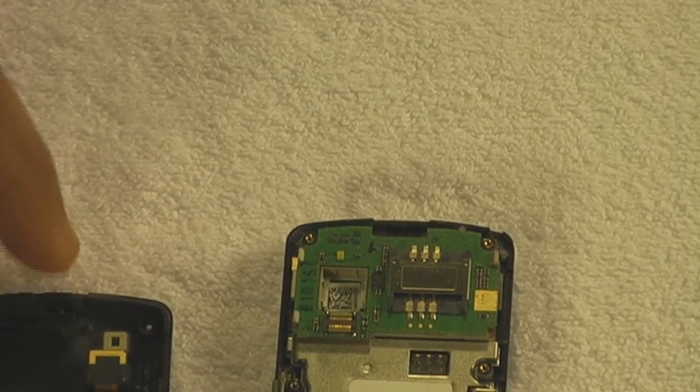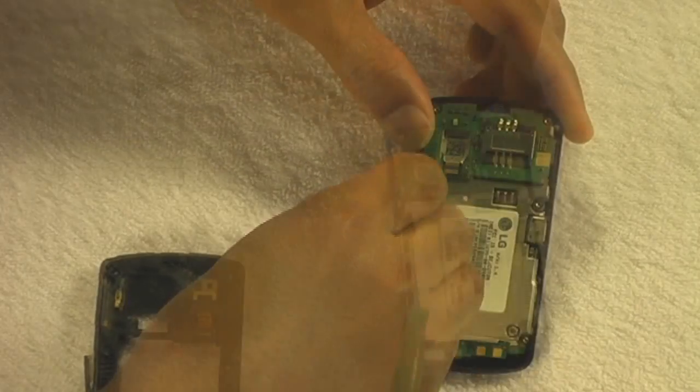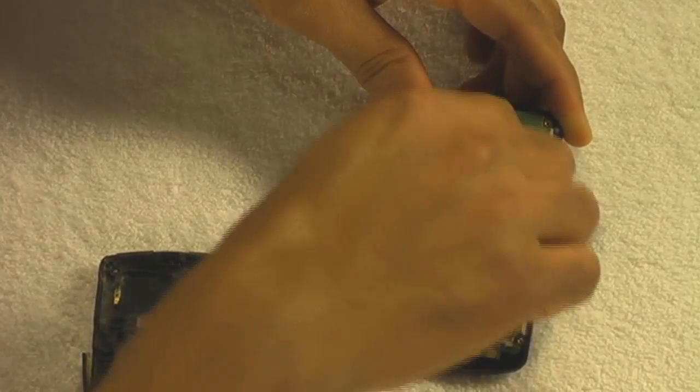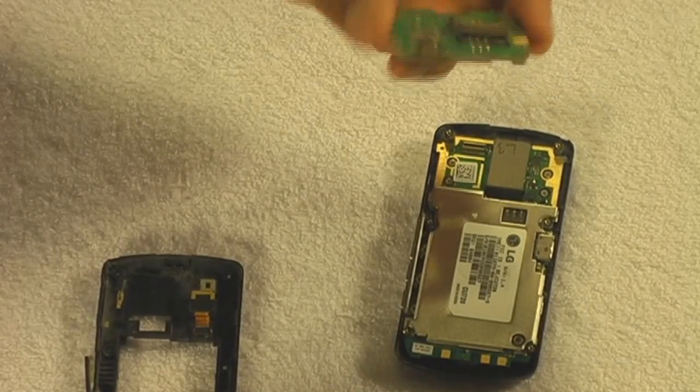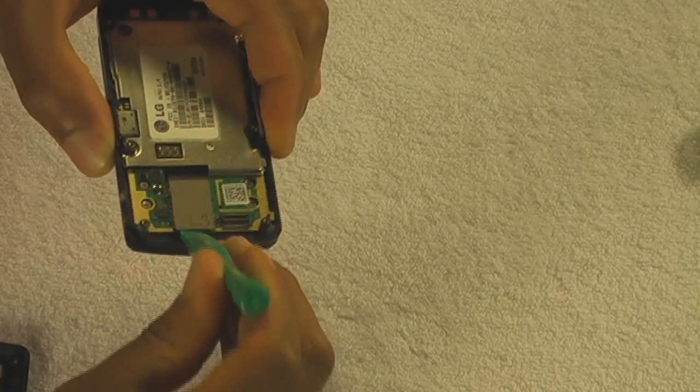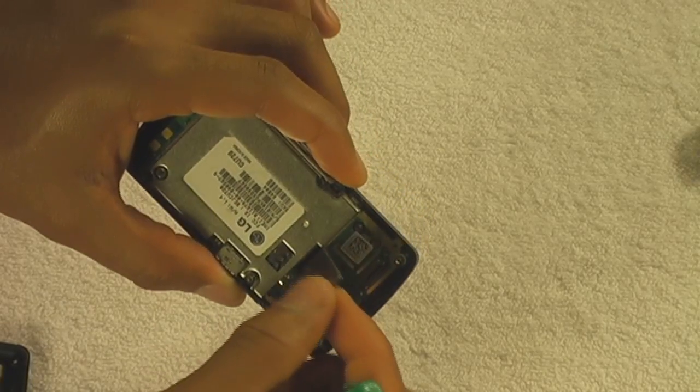This exposes the SIM card logic board, which is what we're going to remove right now. Take that plastic tool and just pry it off. There you go. Now you've got a ribbon cable. Just pop that out and make sure it's free.